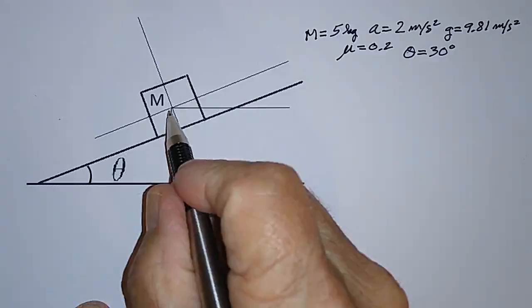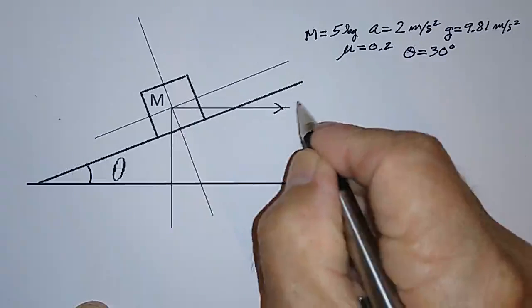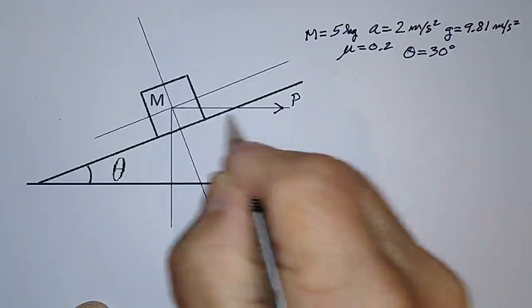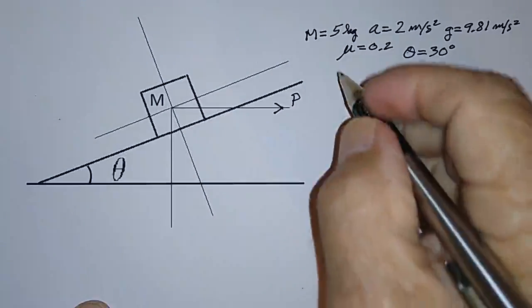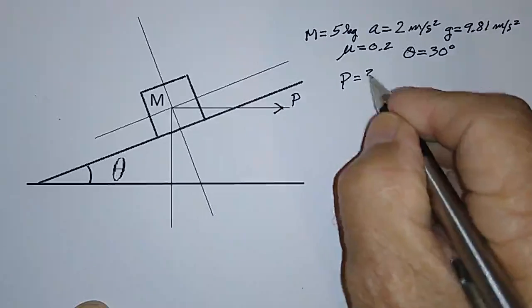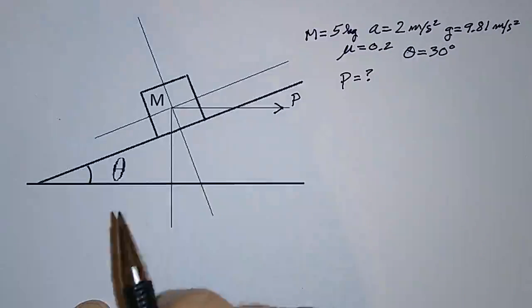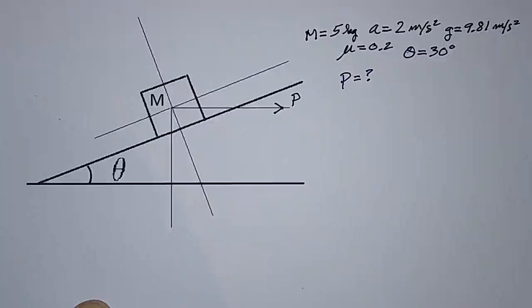Let's say that we push on this object with a force that we're going to call P in the horizontal direction. And the question is, what is P such that the acceleration up the ramp with these other parameters is 2 meters per second squared?